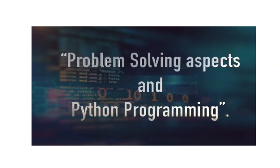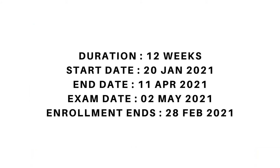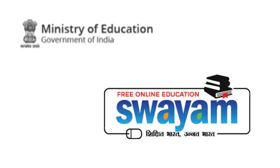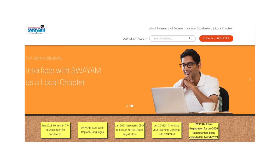The next course is Problem Solving Aspects and Python Programming. This course is offered by an engineering college. The course duration is 12 weeks. It already started on 20th January, but enrollment is open until 28th February, so you can catch up with previous week lessons. The exam will be conducted in April, so if you are interested in this course, you can join.